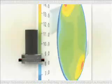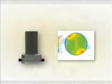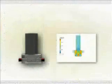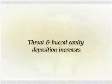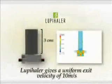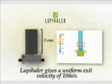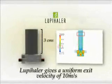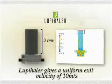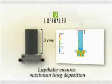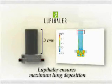If the length of the mouthpiece is reduced, the exit velocity becomes non-uniform and results in higher buccal cavity and throat deposition. Loopyhaler's mouthpiece gives a standard uniform exit velocity, which is proven by this radioactive imaging data, at approximately 10 meters per second, thus ensuring maximum lung deposition.